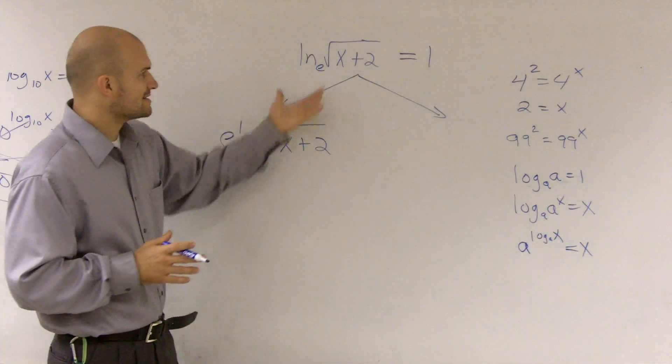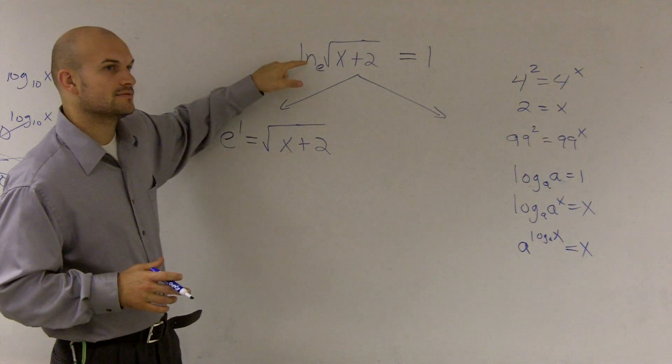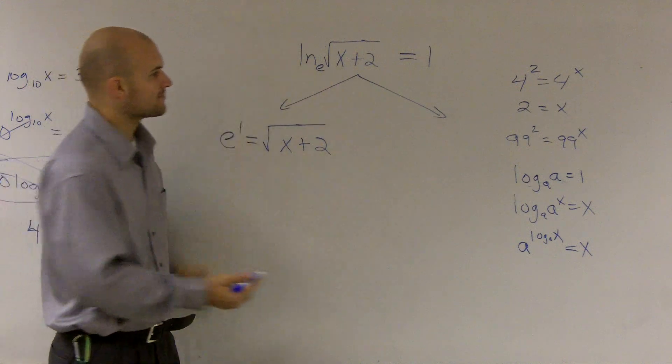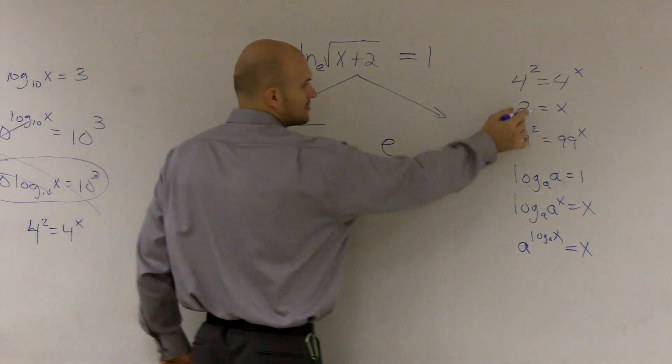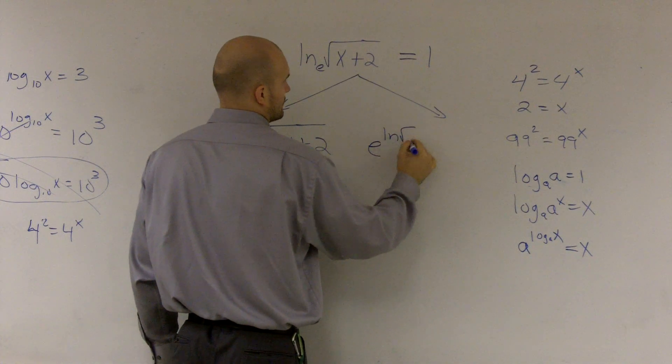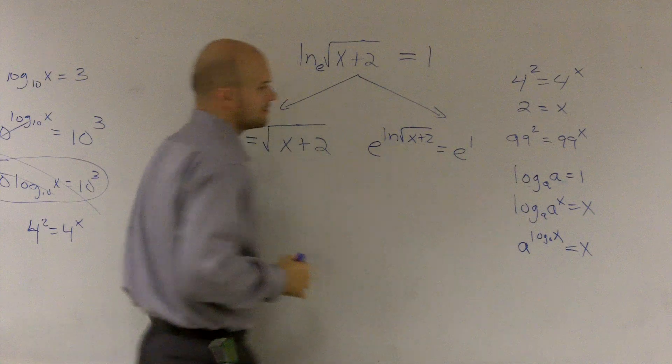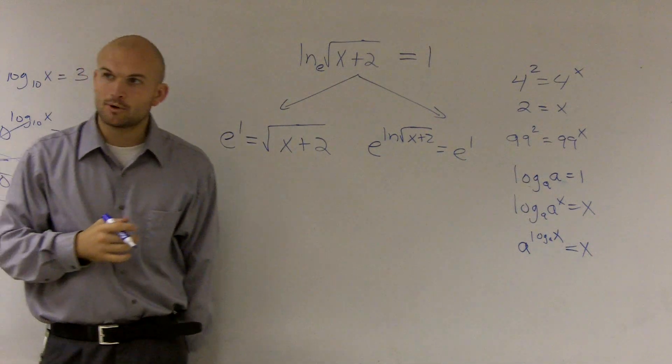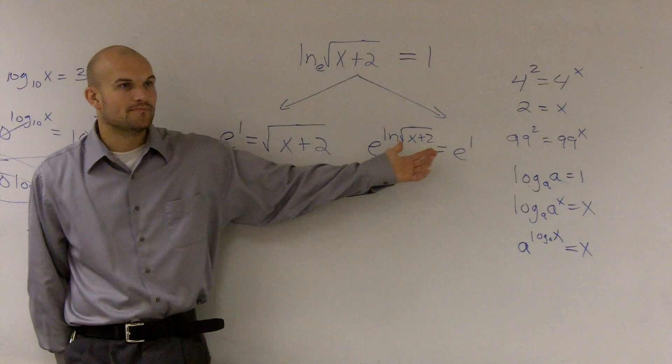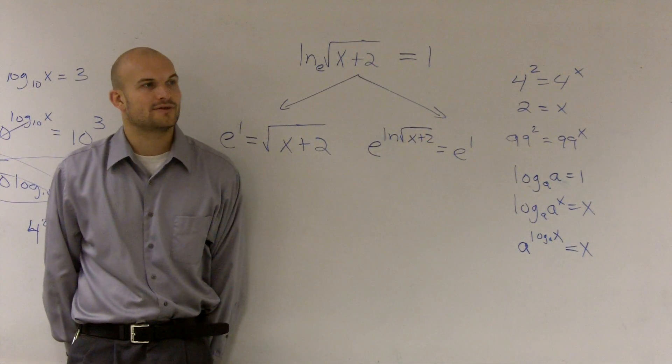So the other method I could look at this and say, well, I need to get rid of this ln. And I don't want to evaluate my answer with an ln. So what I can do is raise both sides. I can exponentiate both sides with a base e. So I can raise them both as exponents with my e as my base. Now, why would I ever want to do that?